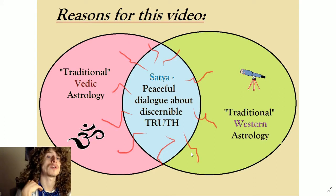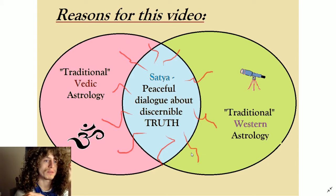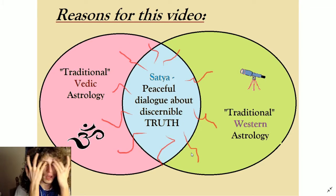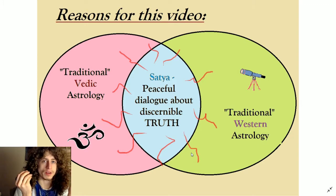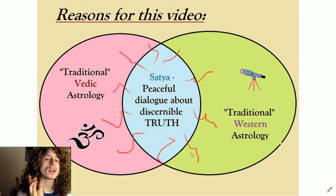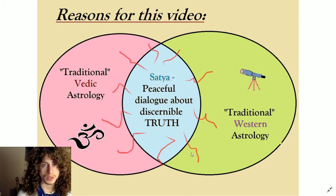You saw this from our first slide. The reason for this video is that we want to combine traditional Vedic astrology with traditional Western astrology and bring them together in order to find the satya — the peaceful dialogue that these two sides can have about discernible truths that are universally true between the two of them.